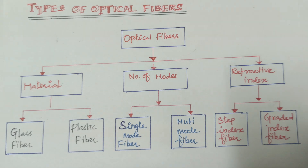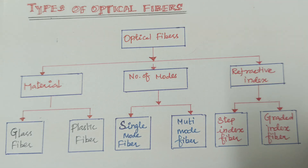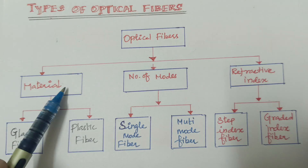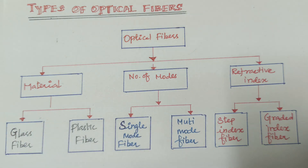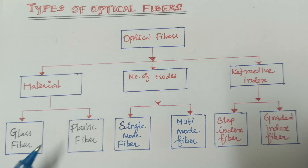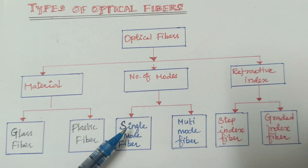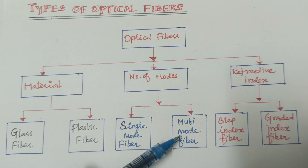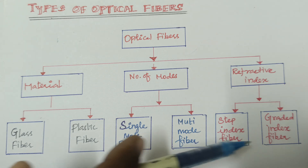Good evening. Today we are discussing types of optical fiber, a topic from fiber optics. Optical fiber is classified into three types: one is based on materials, second one based on number of modes, and third one based on refractive index. Based on materials, there are two types: glass fiber and plastic fiber. Based on number of modes: single mode and multi-mode fiber. Based on refractive index: step index fiber and graded index fiber.